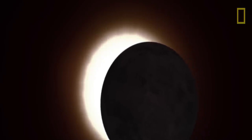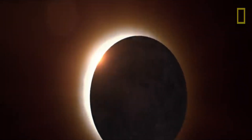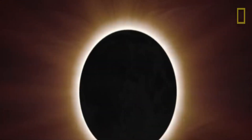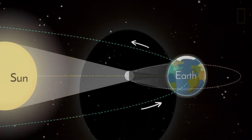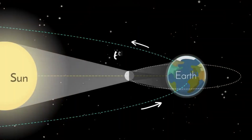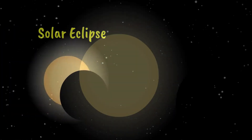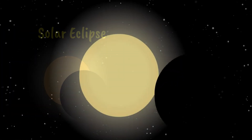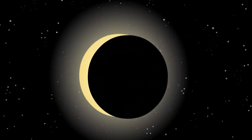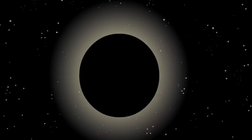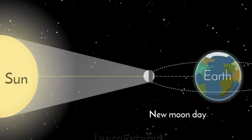How does a solar eclipse occur? Solar eclipses occur only during a new moon phase when the moon is positioned between the sun and the earth. The moon's shadow has two parts: the umbra and penumbra. The umbra is the darker part of the shadow, and the penumbra is the lighter part.